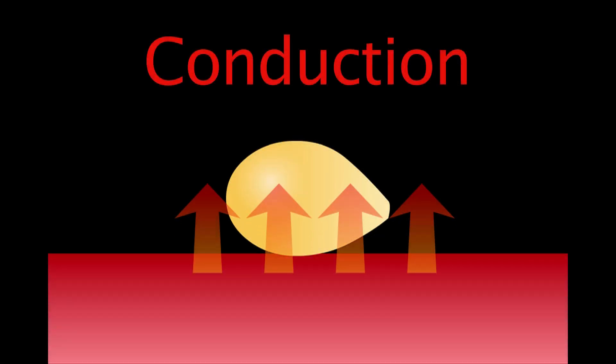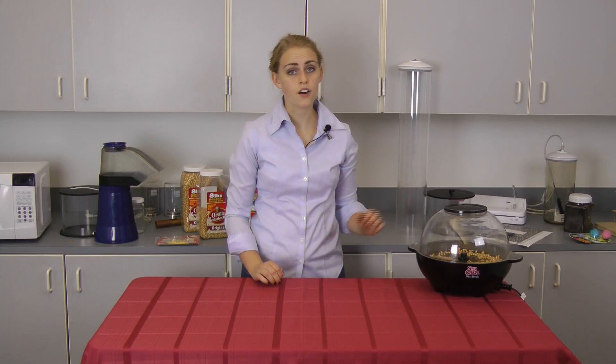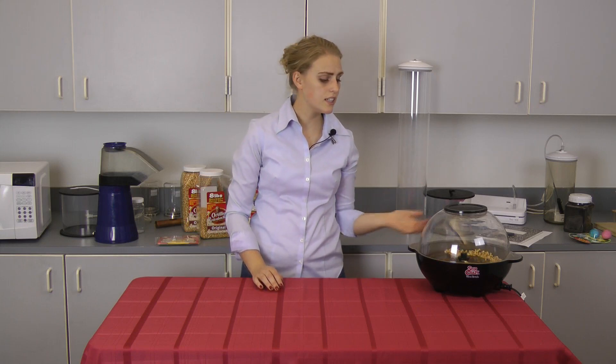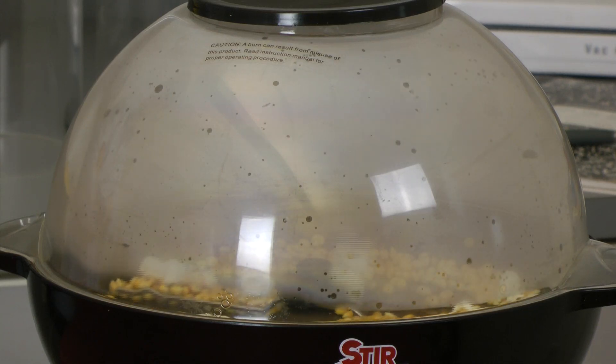There are three methods that we can use to heat up the popcorn kernels. The first one is conduction. We'll be using an electric stirring popper. This popper consists of a hot plate and a stir arm that's going to stir the kernels to keep them from burning. Conduction is the transfer of heat through a medium. The hot plate is a great conductor — a heater on the inside heats up the underside of the plate, and the heat is then transferred through the plate and to the kernels sitting on top.